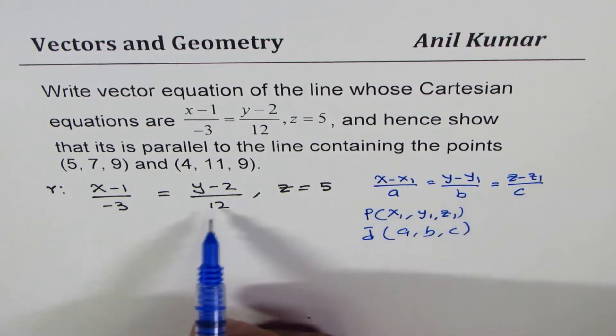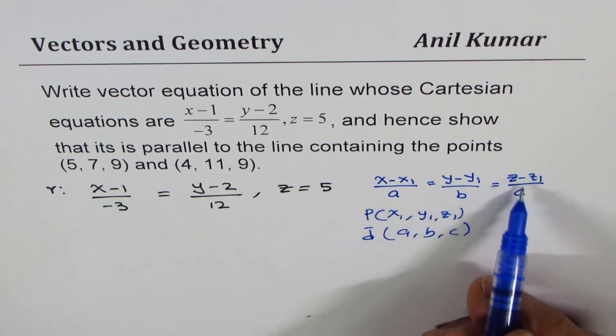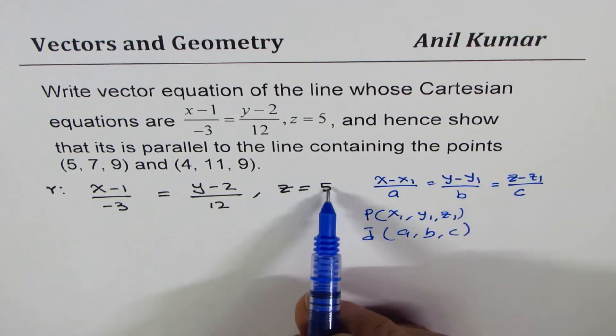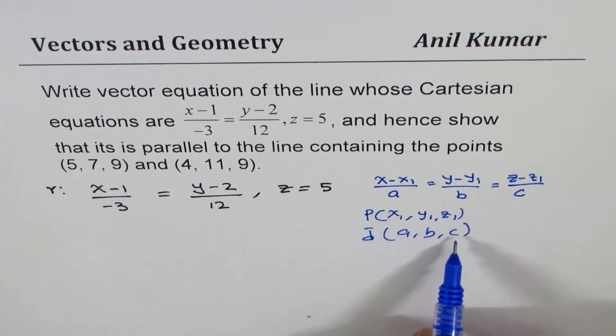However, if c is 0, you cannot divide by anything. So you write like this. c is 0 means no change in z. So z is constant. So if nothing is there in the denominator, it doesn't make it 1. It makes it 0.